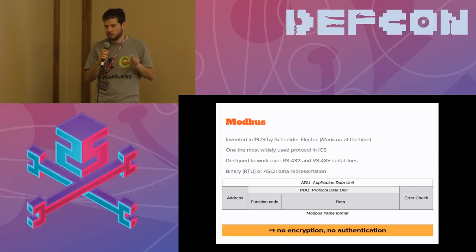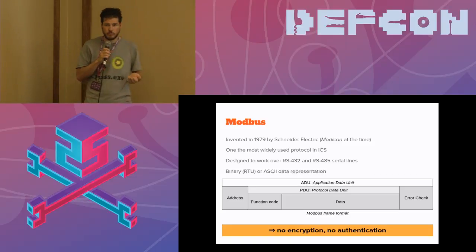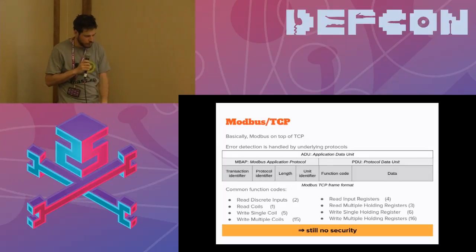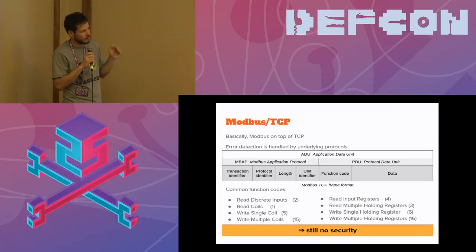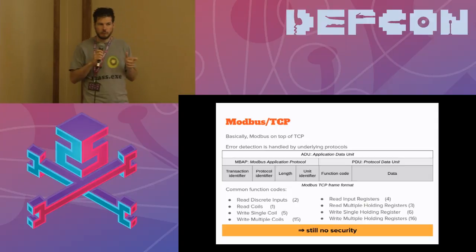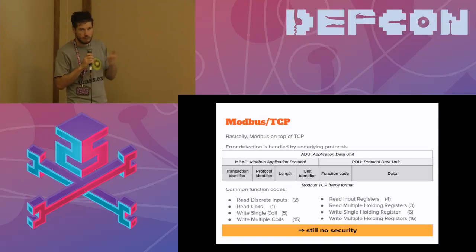The reason I mention the frame format is to show that there is no security built into the protocol — no encryption, no authentication. That was not really a problem when using it over serial lines. However, when they moved Modbus to TCP, they just removed the integrity checks since that's handled by the TCP layer. The Modbus TCP frame format has the PDU — function code and data — plus a transaction identifier, a random number to match requests and responses, a protocol identifier usually set to one, the packet length, and the unit identifier, which is typically set to one since the IP address already identifies the PLC.